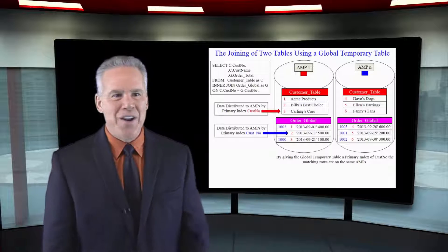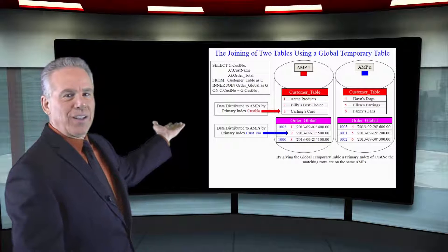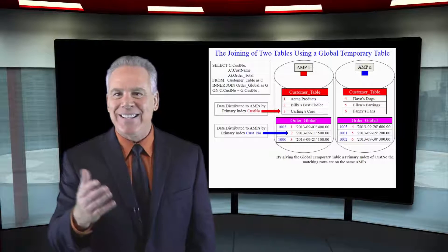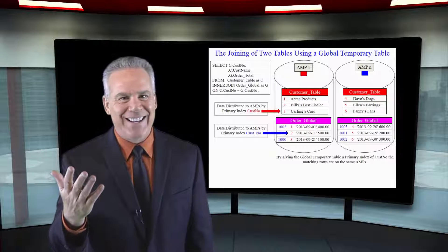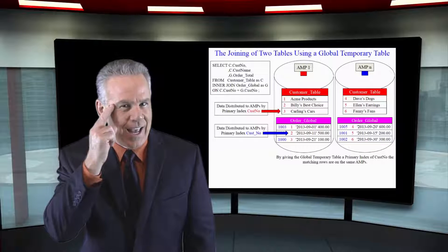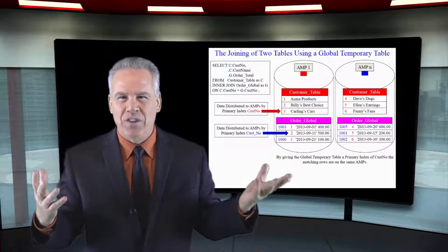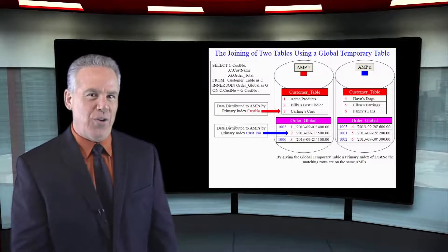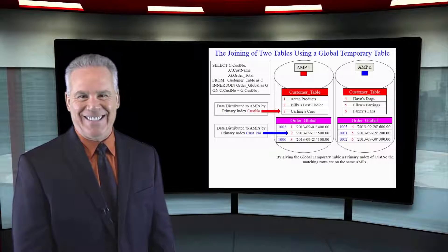Once again, I've joined these two tables on customer number and customer number CUSNO. Since they both have the primary index of CUSNO, because I was thinking ahead, this join could save hours. And that's the beauty of understanding what you're doing behind the scenes.